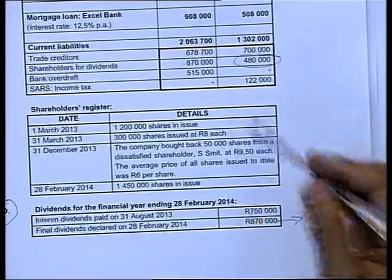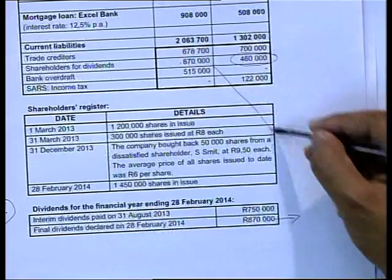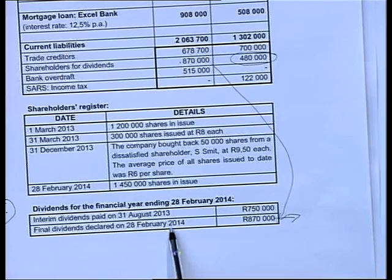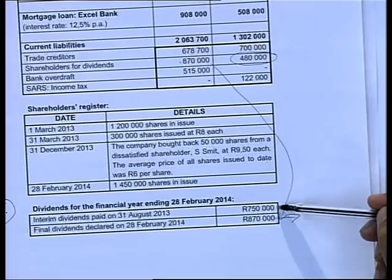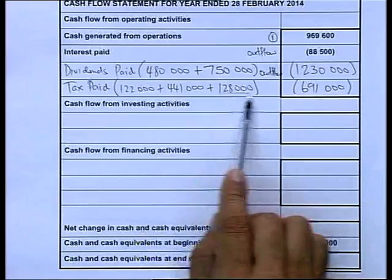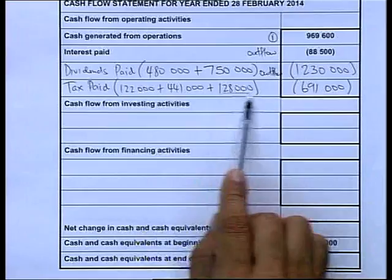There's still a question on the 870 not paid in dividends. If it's not paid, we owe the shareholders 870,000. The final dividend was declared but not paid - that's why the final dividend and the balance of shareholders should be the same figure. The final dividend declared on 28th February is 870,000, which was not paid. What was paid was the opening balance of 480,000 plus the 750,000 interim dividend. We can also reconstruct a SARS income tax account to verify our tax calculation.